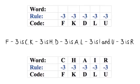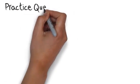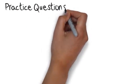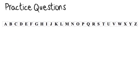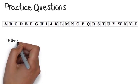Now use the rules to turn the code into a word. F minus three is C, K minus three is H, D minus three is A, L minus three is I, and U minus three is R. Write the letters above the code and the rule and you'll have the word: C H A I R. Rule: minus three. Code: F K D L U.